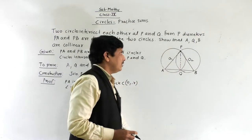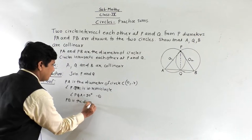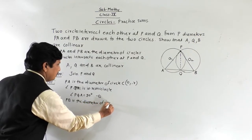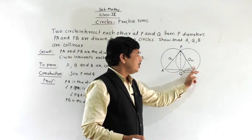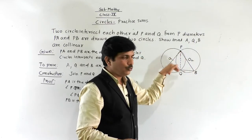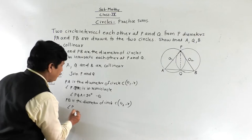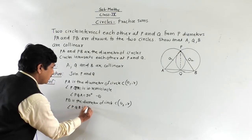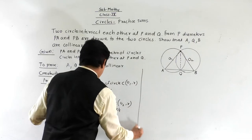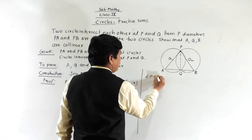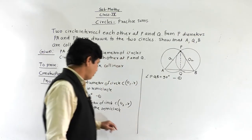Now, PB is the diameter of the circle with center O2 and radius R. Angle PQB is also in the semicircle. Since angles in a semicircle are always a right angle, angle PQB is equal to 90 degrees. This is our second result.